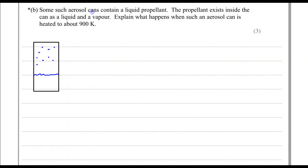Some aerosol cans contain a liquid propellant. The propellant exists inside the can as a liquid and a vapor. Explain what happens when such an aerosol can is heated to about 900 Kelvin.